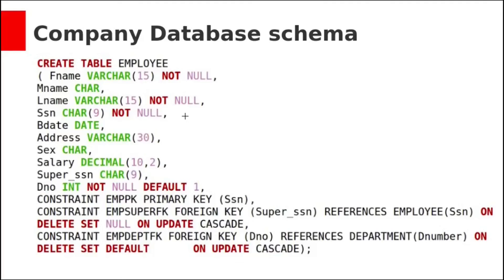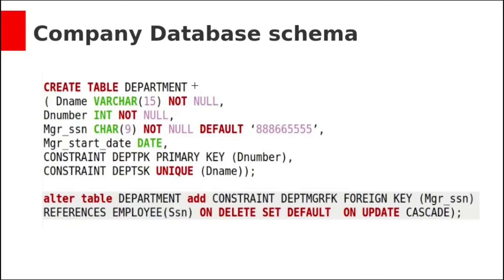We can also give names to constraints. For this constraint we can specify a name such as EMP_KEY for the primary key, and EMP_SUPER for the foreign key. We can also add ON DELETE SET NULL and ON UPDATE CASCADE clauses. If you use ON DELETE SET NULL, when you delete a parent record, all child rows will be set to null. When you use ON UPDATE CASCADE, when you update the value, the same update will cascade to all the corresponding child rows. You can add these ON DELETE and ON UPDATE clauses for the department table and other tables as well.